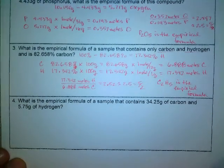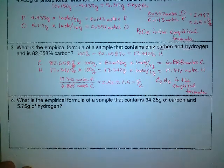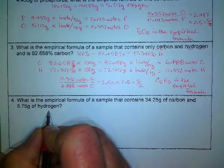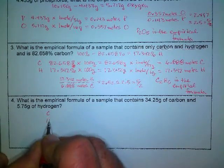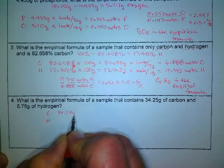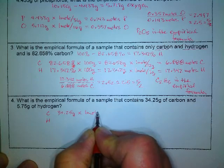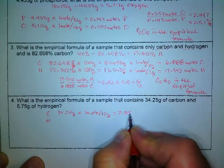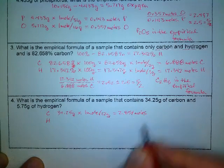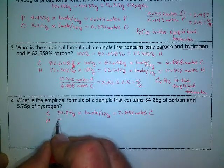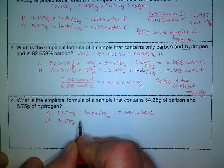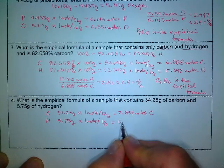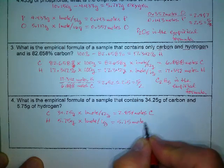Alright, last example. This time we just have the gram amount, so I don't have to worry about going from percentages. I can go right to the moles. So first, for my carbon, I have 34.25 grams times one mole over 12 grams, and this comes out to 2.854 moles of carbon. I have 5.75 grams of hydrogen, and again, one gram per mole, so I get 5.75 moles of hydrogen.